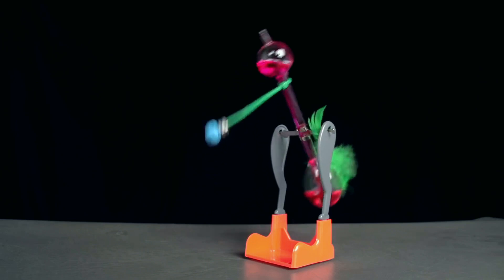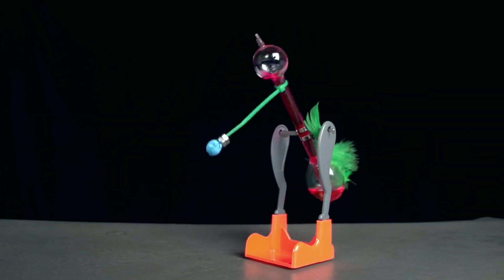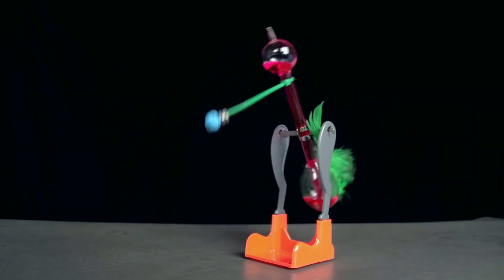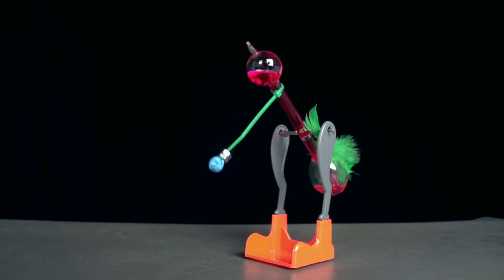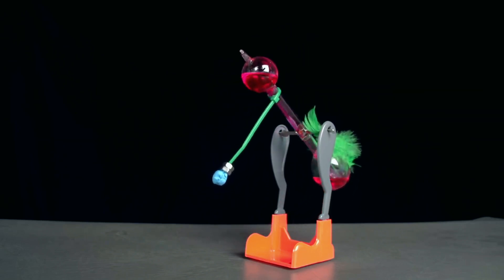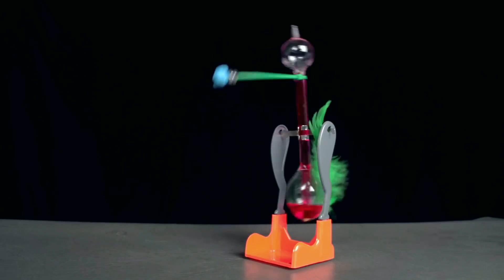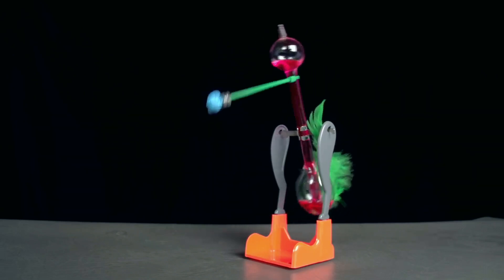It drinks. It becomes upright, and the liquid drains from the head. Liquid rises again to the head and the bird drinks again. This cycle repeats until all of the isopropyl alcohol on the bird's head evaporates.